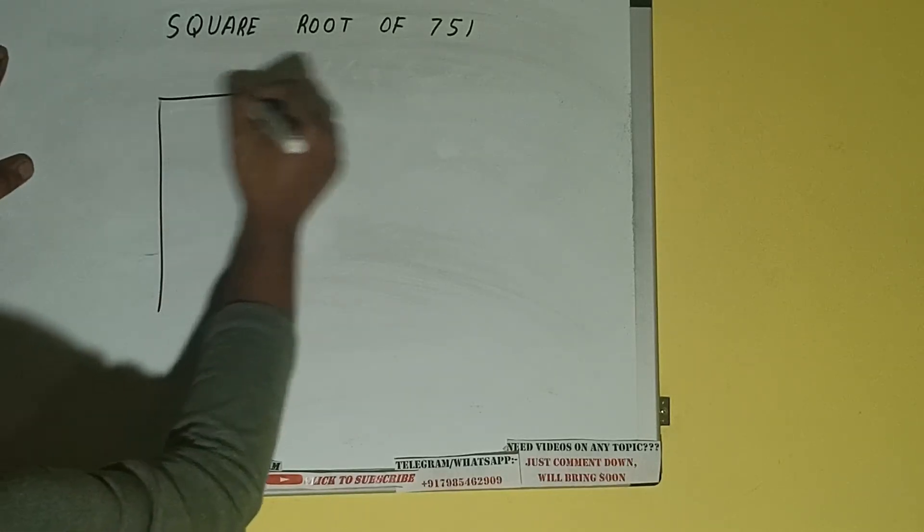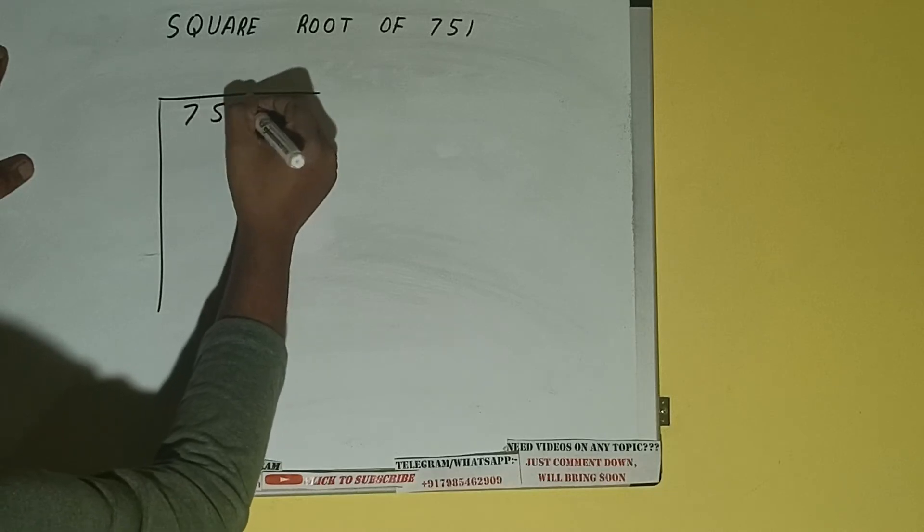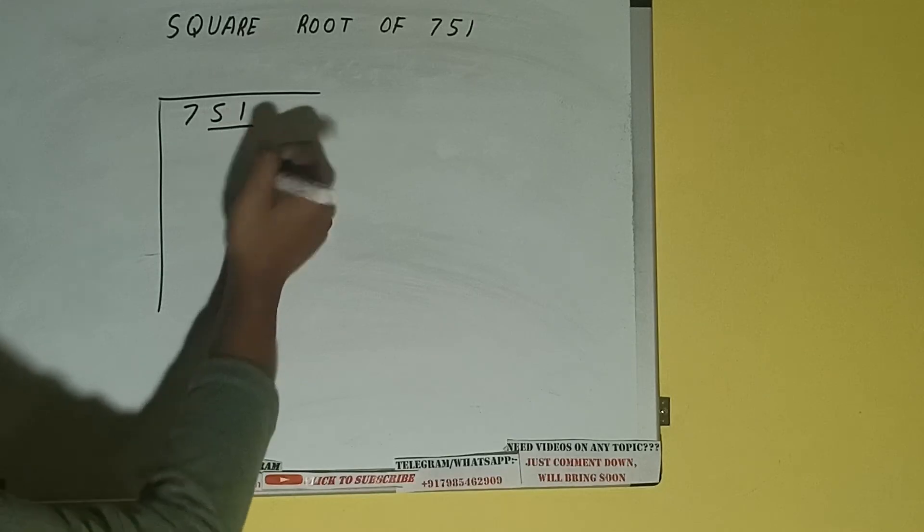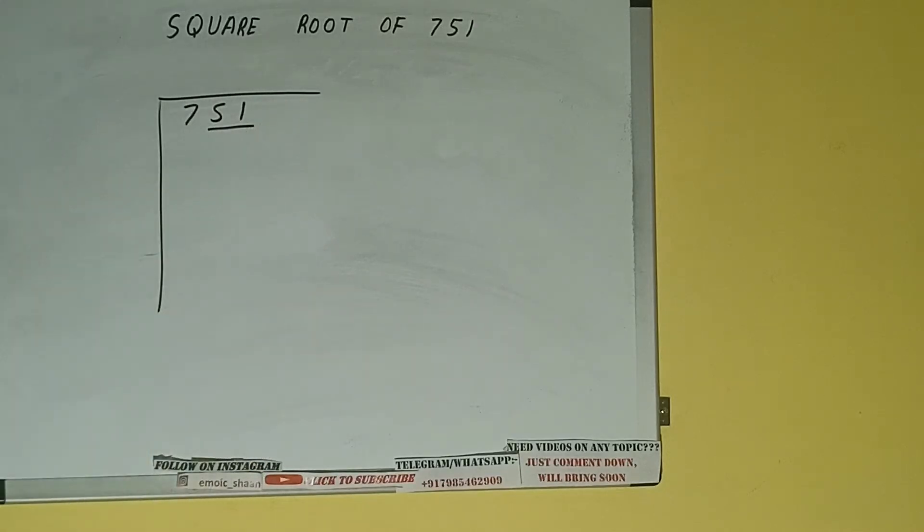First, we need to write the number. Next, we need to form pairs from the right-hand side. One pair will be 51, and this 7 will be left out.